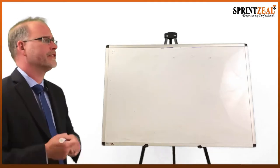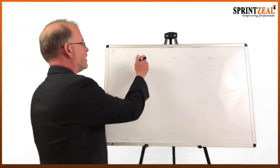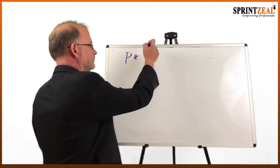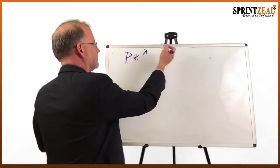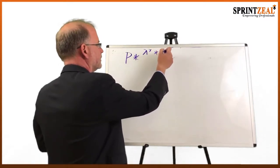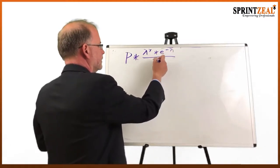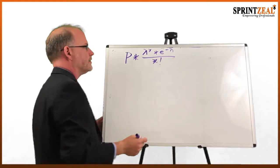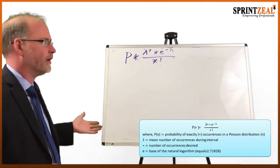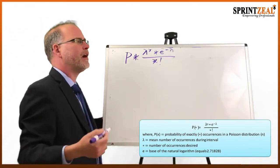To do that, we have to understand what the Poisson formula is. The Poisson formula looks like this — it can look confusing at first, but once we understand what all those symbols mean, it becomes straightforward. So the first thing we have to understand is the probability component.